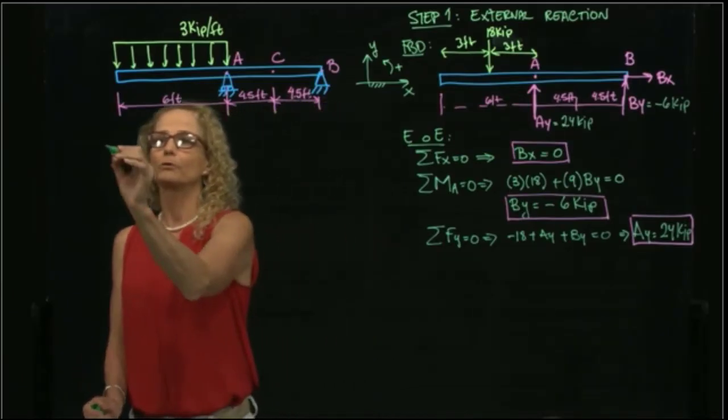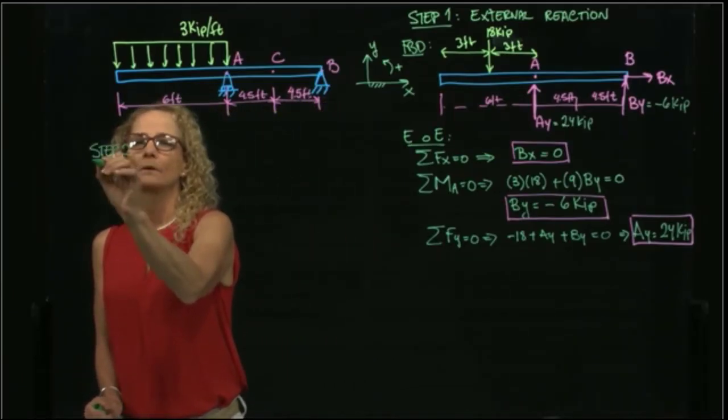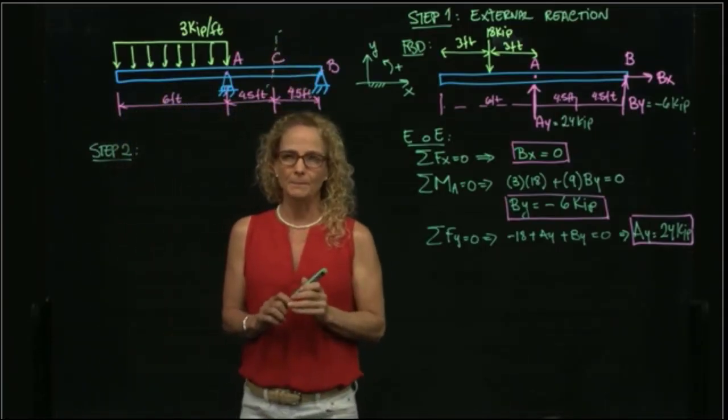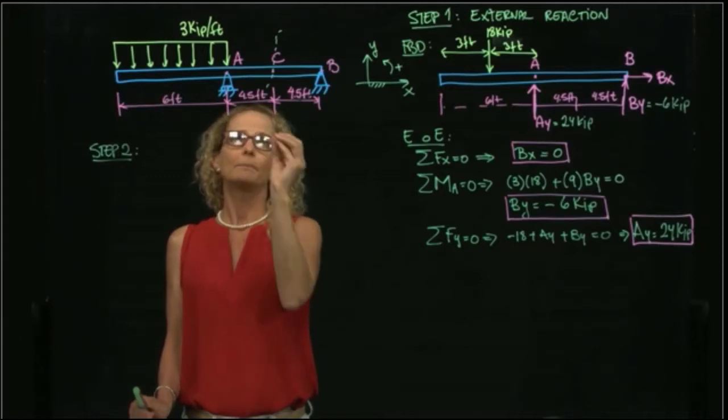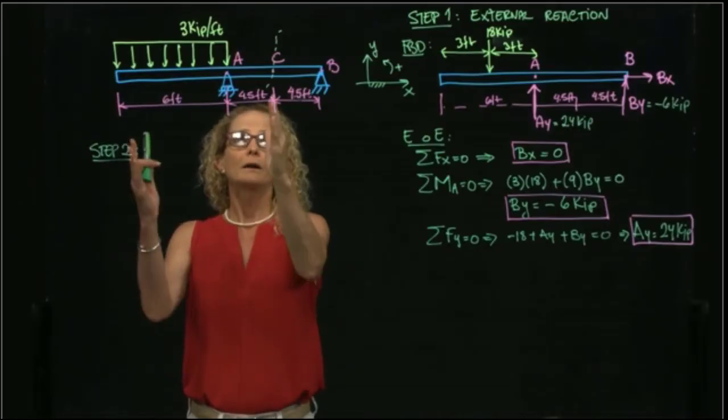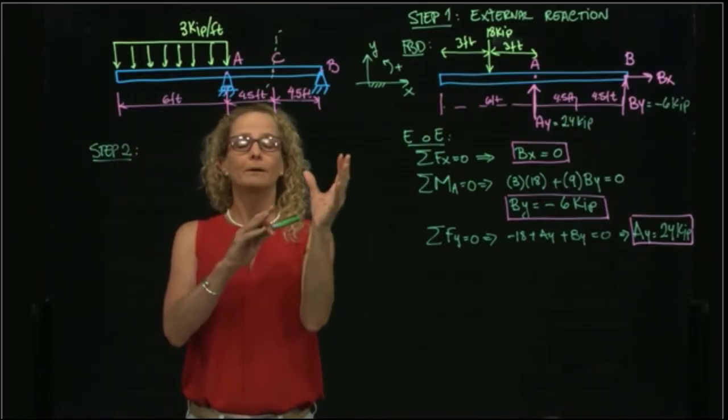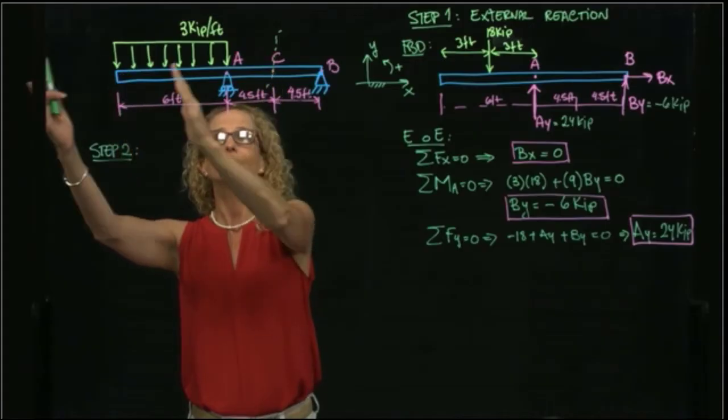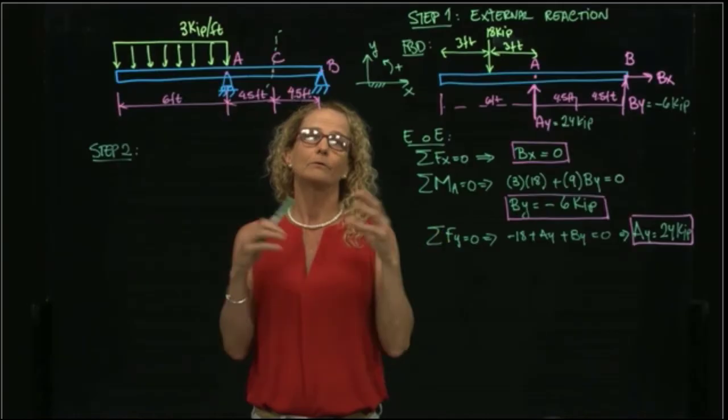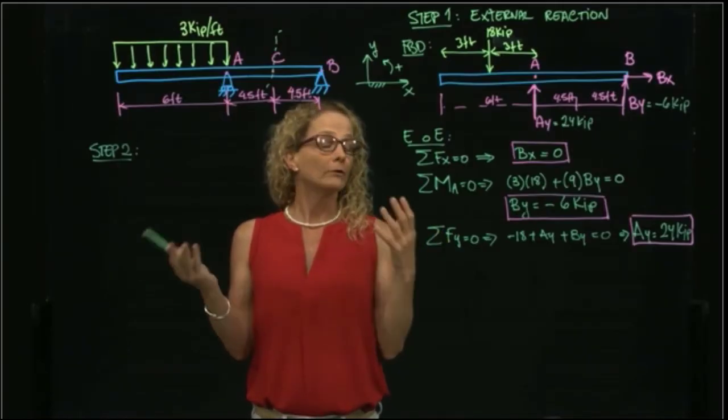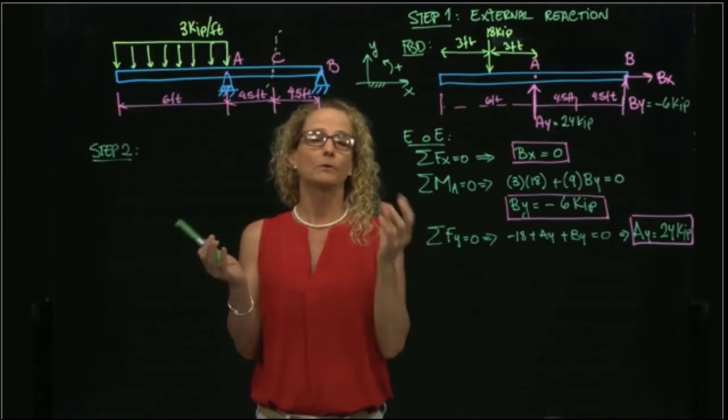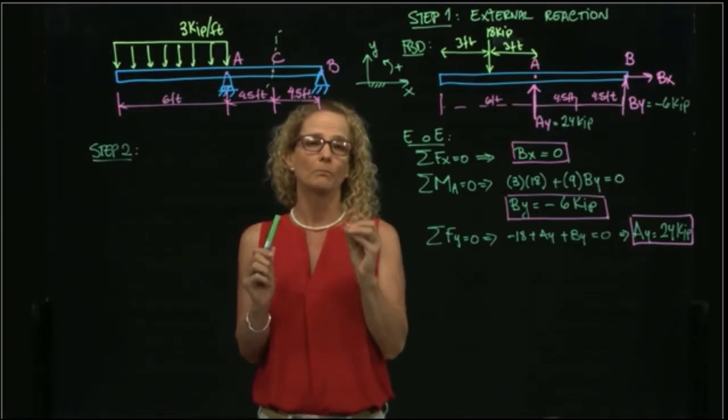Now that I have the external reactions, I do step 2, which is doing a cut in my beam. When I do a cut at the beam, I will have the internal reaction. So let me do a cut and I will draw both free body diagrams, the one from the left side and the one from the right side. And then I will decide which one to use. You don't have to draw both, but since we are learning still how to draw free body diagram for internal forces, I will draw both this time.